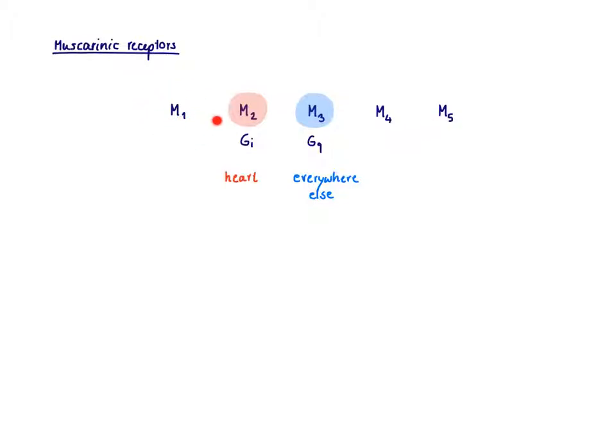M1 has more of a modulatory function and M4 and M5 are predominantly found in the CNS, so we don't need to worry about them right now. In the peripheral organs we have mainly M2 and M3. M2 is found on the heart and M3 is everywhere else, so that's easy to remember.